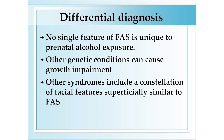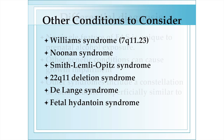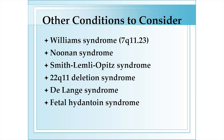None of these characteristics is unique to fetal alcohol syndrome by itself. There are other conditions that can cause similar patterns of physical characteristics and growth impairment and should be considered when a child is evaluated for fetal alcohol syndrome. Although each of these in some way overlaps with fetal alcohol syndrome, they all can be easily distinguished from FAS.